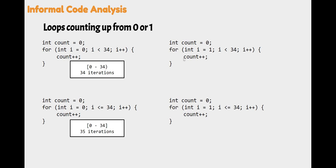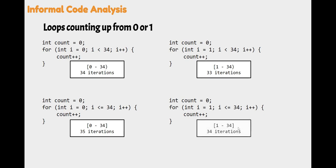Moving up to the top right, we are initializing I to one, looping while I is less than 34, counting up by one. So that's one through 33 — that's 33 iterations. And on the bottom right, directly underneath that, we are initializing I to one, looping while I is less than or equal to 34. That's one through 34 inclusive. That's 34 iterations.